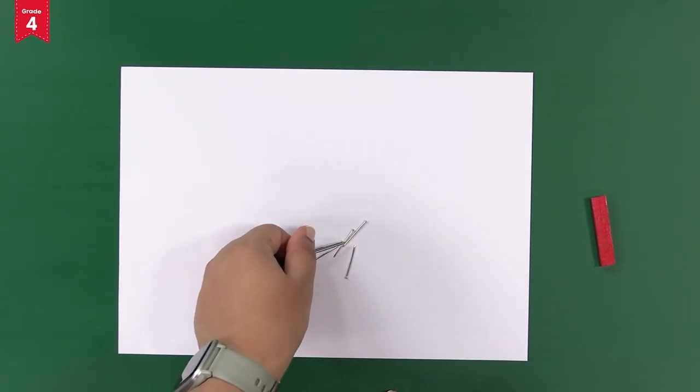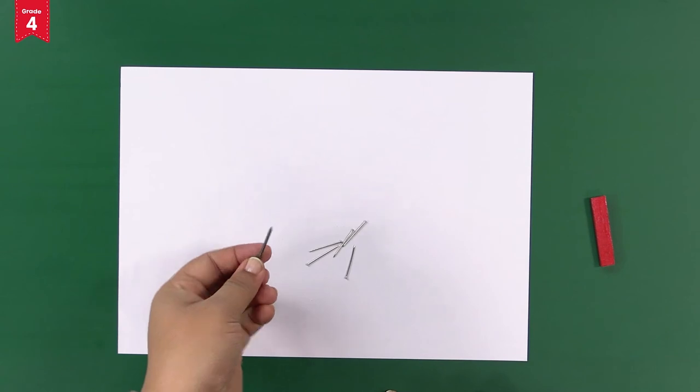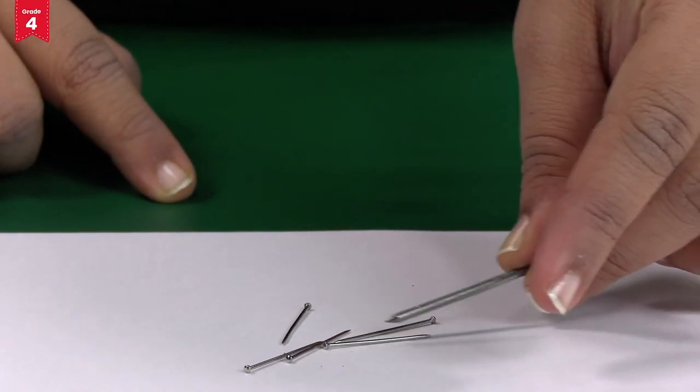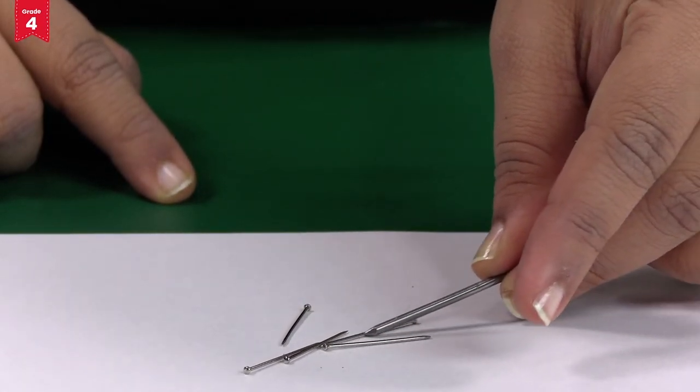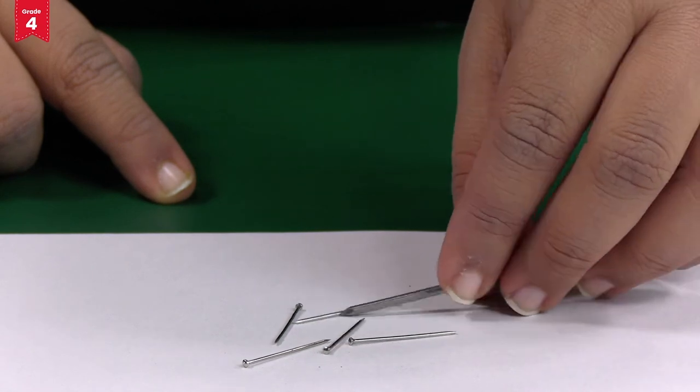After some time, the magnetic property of the iron nail will be lost, and that's why we call this a temporary magnet and not a permanent one.